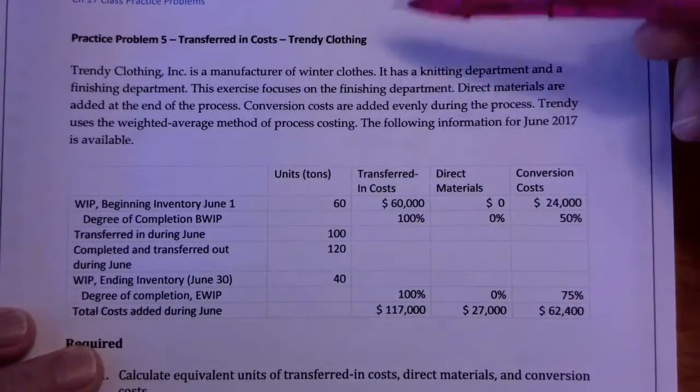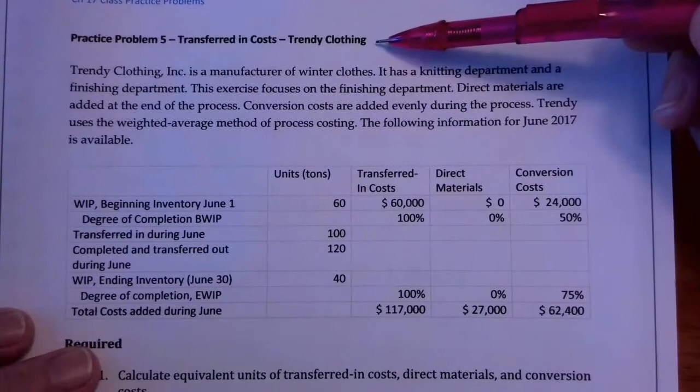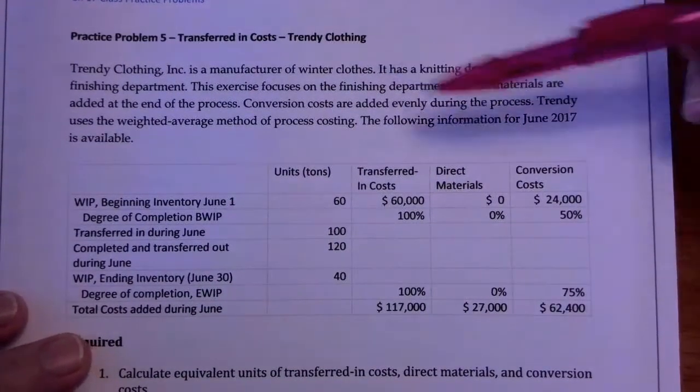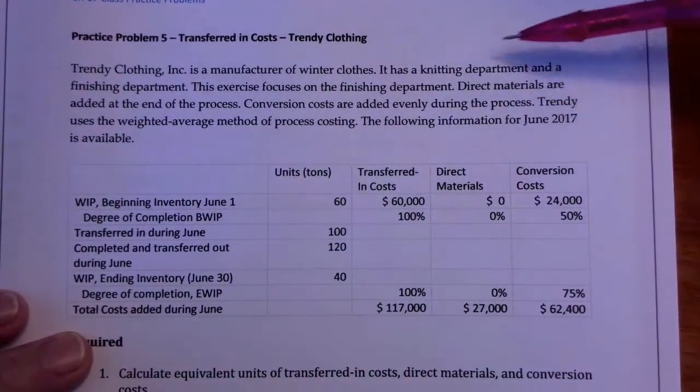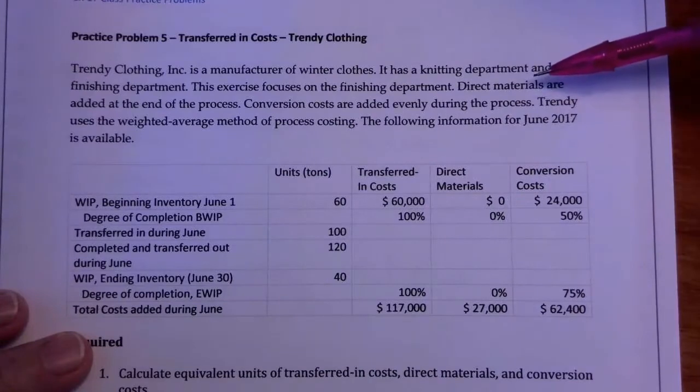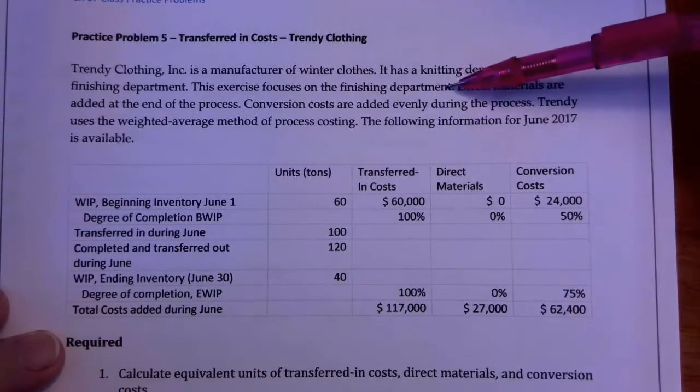Okay, this is problem five on transferred-in costs. This is Trendy Clothing, a manufacturer of winter clothes. They've got a knitting and a finishing department.